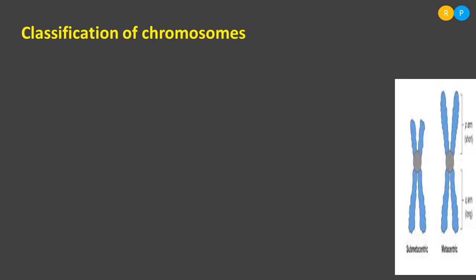Now let us move to the classification of chromosomes. Chromosomes are classified into different types based on the position of the centromere. Centromere is the primary constriction of the chromosome. Observe the diagram on the screen — each chromosome consists of a primary constriction. The circular oval-shaped structure you observe in the chromosome is the centromere, and on either side of the centromere we can find the arms.